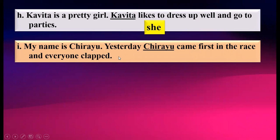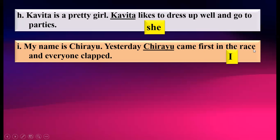For example, my name is Chirayu. Yesterday, Chirayu came first in the race and everyone clapped. Whenever we are speaking about ourselves, we do not take our own name. Like Kavita would say 'I went to market', not 'Kavita went to market'. So this Chirayu is a name of a boy, but this person will say 'yesterday I came first in the race and everyone clapped'. So we will write 'I' over here.